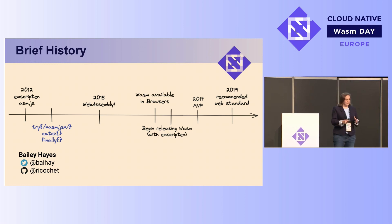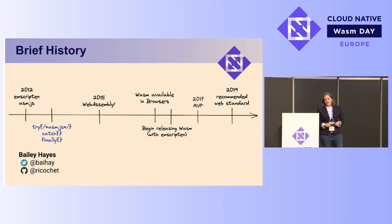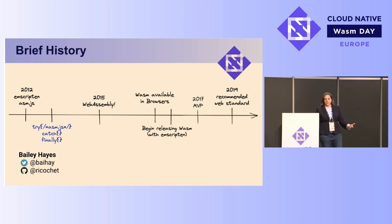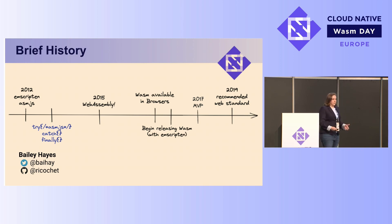With ASM.js, we proved a point that there was a need. There was more than just games that were interested in running real, computationally intensive code in the web. And that's when a number of the browser vendors got together and pushed forward a specification — WebAssembly — and that design phase started in 2015. Basically the moment it was available in any browser, we began compiling to it with a tool called Emscripten. And by 2019, it's a recommended web standard and officially the fourth language of the web.